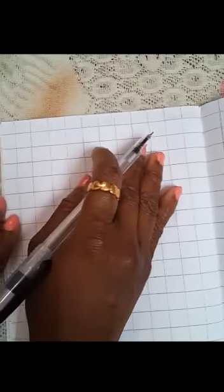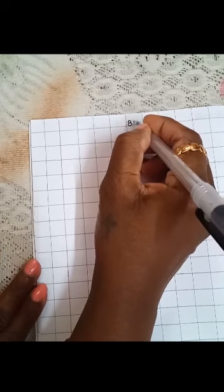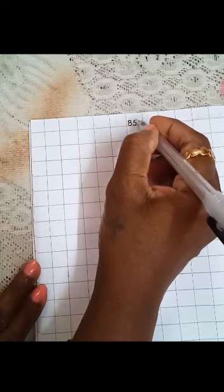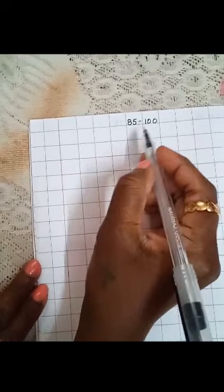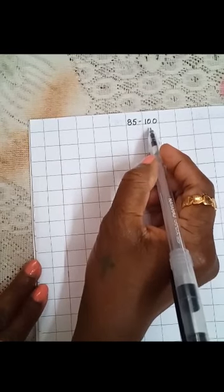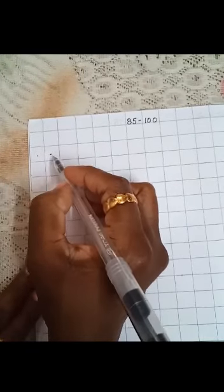Now take your next page. Behind. Okay. Now here you are going to write the next set of numbers. 85 dash 100. So you have to write the numbers from 85 to 100. Again put two dots.